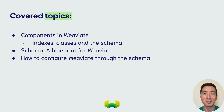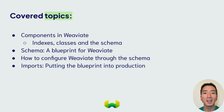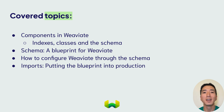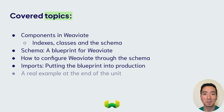So we'll use this unit to start building that understanding of what indexes are, what a class and its properties represent, and how to configure them all through the schema. And then we'll put this blueprint into practice by importing data. You'll also learn about how to import data in Weviate and some best practices along the way, like batch imports and how to avoid duplicate objects.